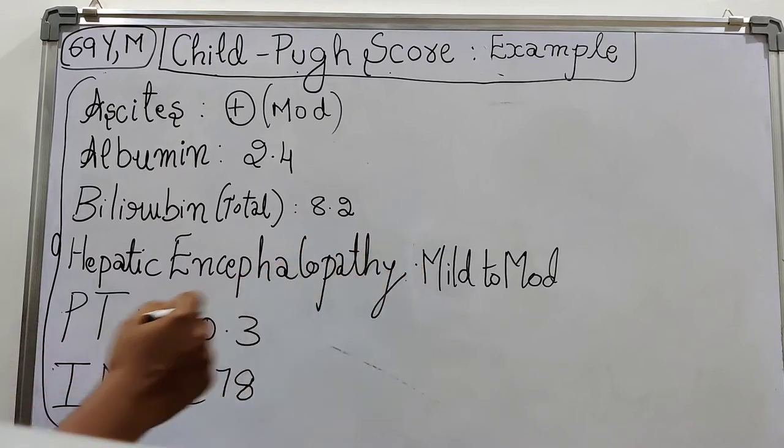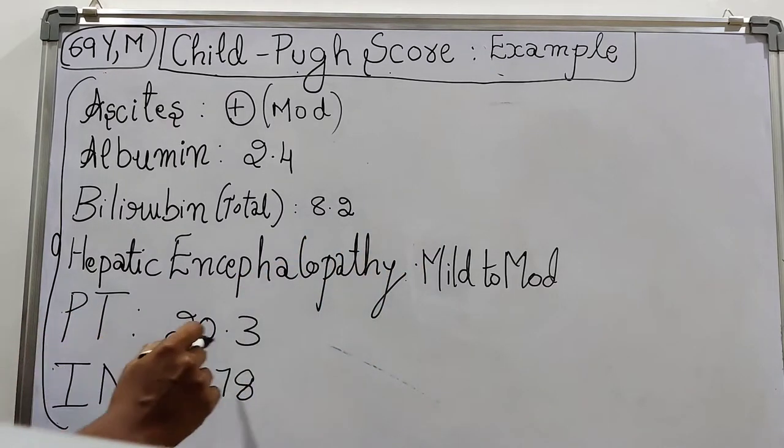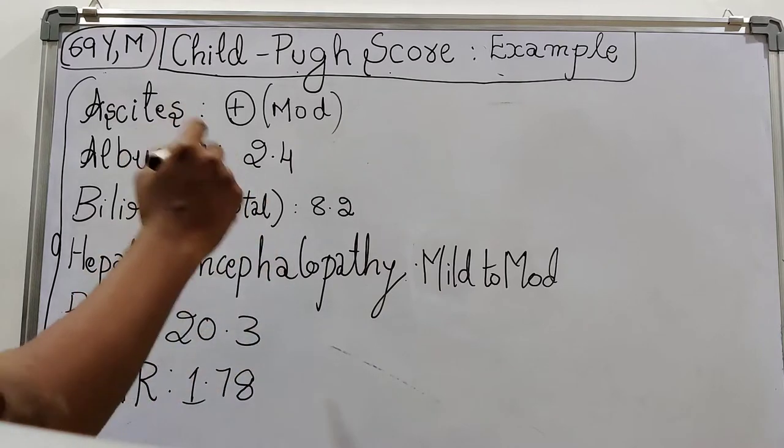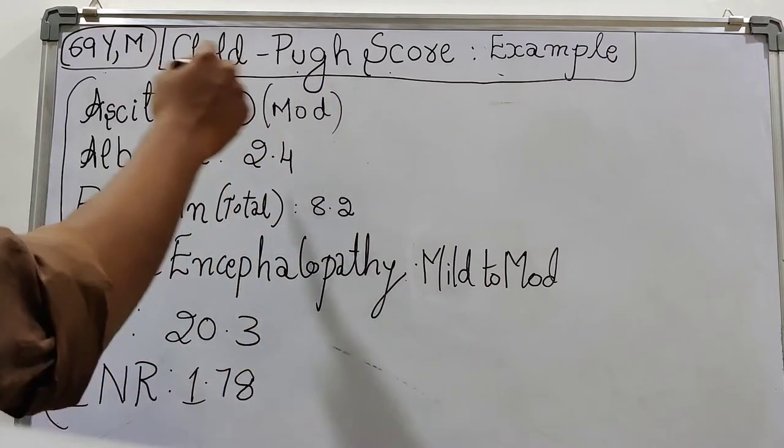Patient's prothrombin time was 20.3. Patient's INR was 1.78.